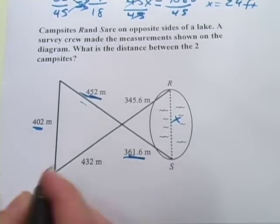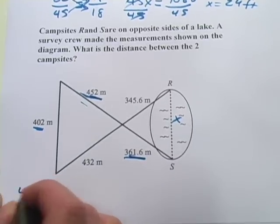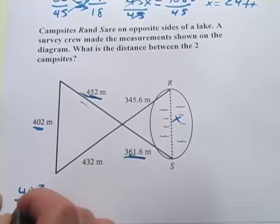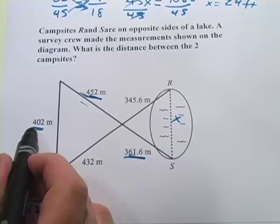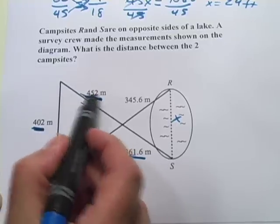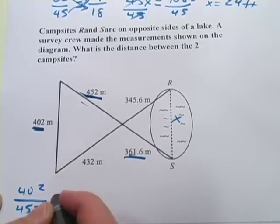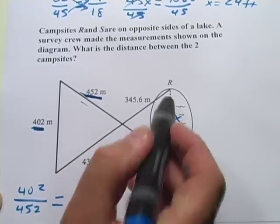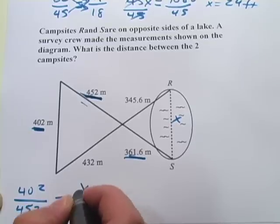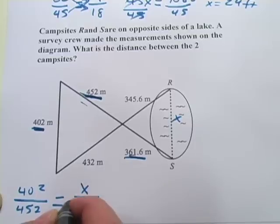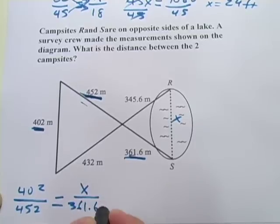Now let's set up our ratio. I'm going to say 402 is to 452. So I'm using the side we're looking for, and then the longer side of that same triangle. And then over here, we'll have the side we're looking for, x, over the longer side of this triangle, 361. And then we have to cross-multiply.